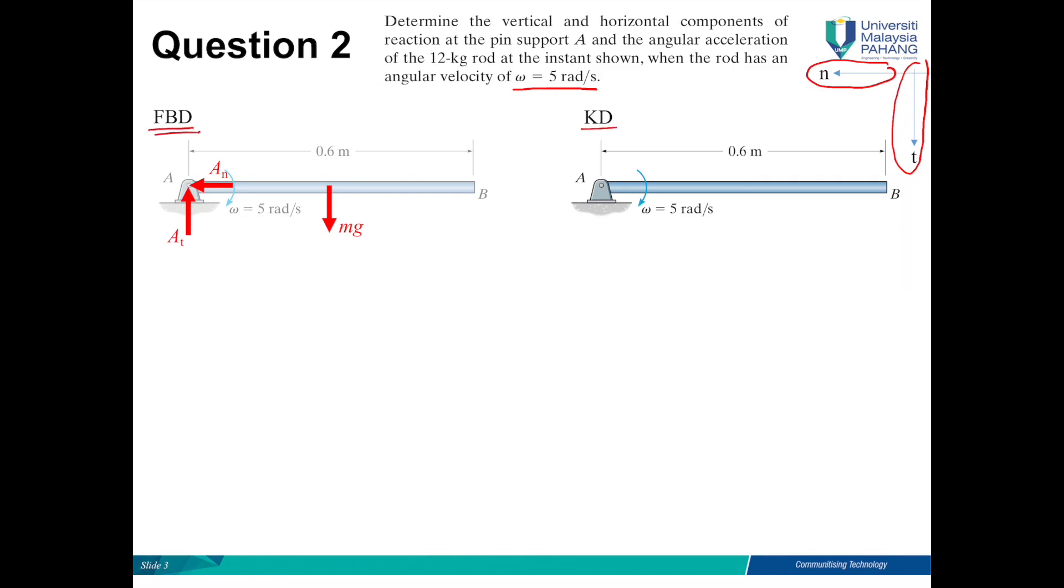Now we move on to the kinetic diagram. There will be motion down, MAGT in tangential coordinate. There will be motion in normal coordinate. Remember, tangential is tangent to the path. If you imagine point G will have this circular path.